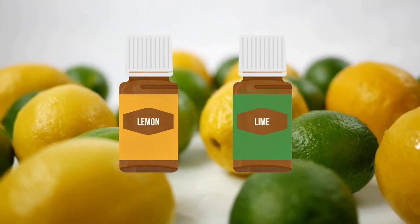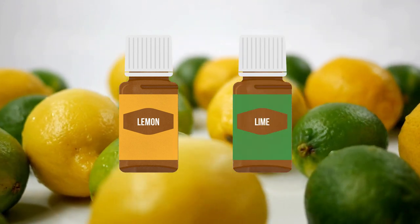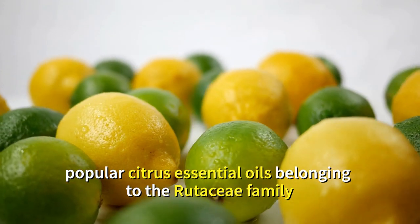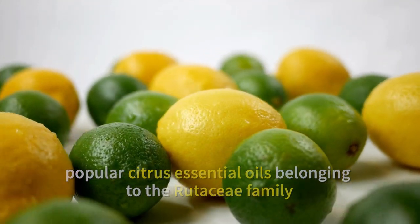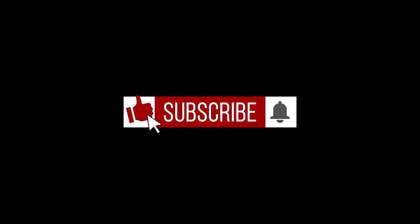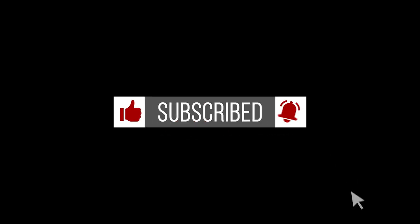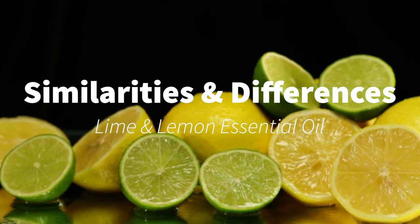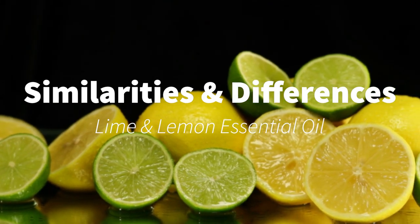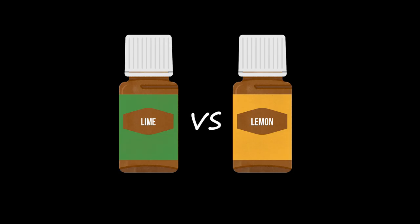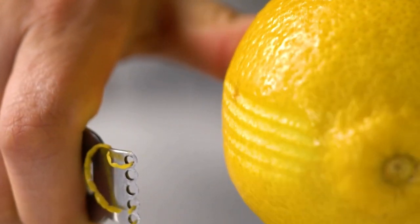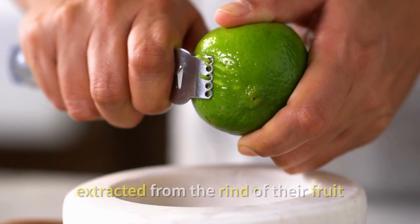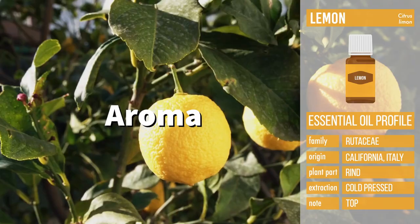Lemon essential oil and lime essential oil are both popular citrus essential oils belonging to the Rutaceae family with distinct characteristics and uses. Now let's dive right in to the similarities and differences between lime essential oil and lemon essential oil. First and foremost, both lemon essential oil and lime essential oil are extracted from the rind of their fruit.